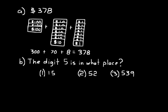Look at practice problem B. The digit 5 is in what place? We have three different numbers there. I want you to tell me what place value the digit 5 has in each of those numbers. In that first one, 15, the 5 is in the ones place. So we would just say ones for an answer. In the second problem, 52, the 5 is in the tens place. So we would say tens for an answer. And then the last one, 539, the 5 is in the hundreds place. It has a value of 500 because it's in the hundreds place. So we would write hundreds for our answer.